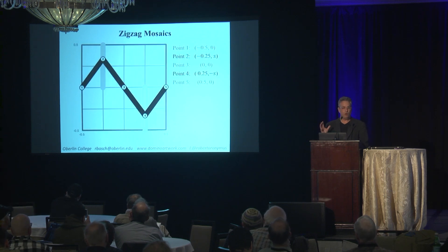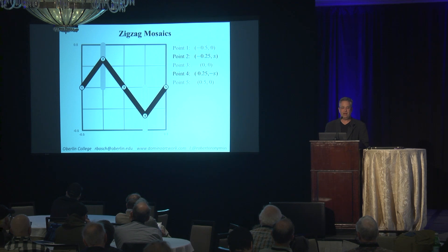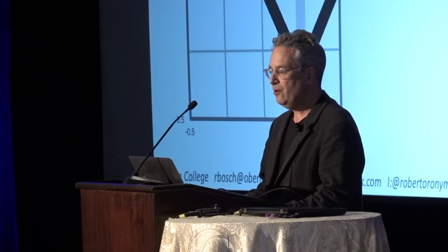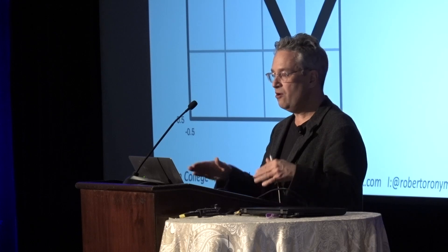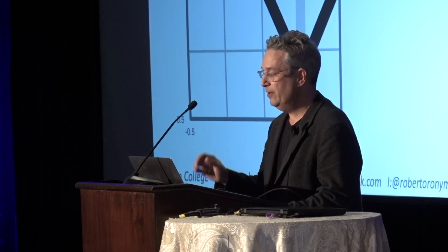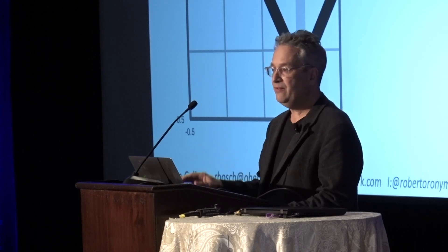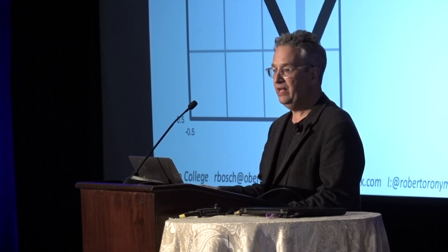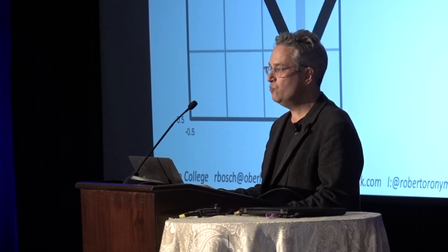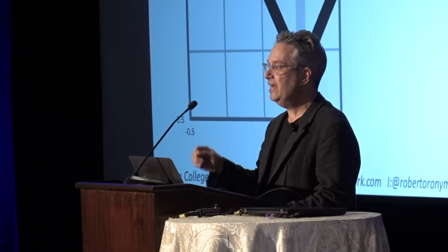Here's one of these zigzag tiles. The zigzag path in black connects the midpoint of the left edge — point number one — to the midpoint of the right edge — point number five. It passes through the center of the square, point number three. The other two points are restricted to be on vertical sliders. The amount that each of those two points is off from the horizontal is controlled by a parameter s. By changing s, we can make the zigzag path shorter or longer. If s equals zero, it's a horizontal line; if s is one-half, it becomes as ziggy-zaggy as we allow.